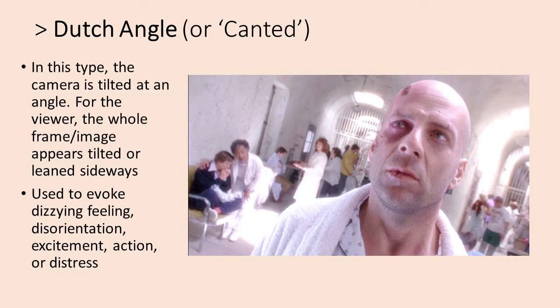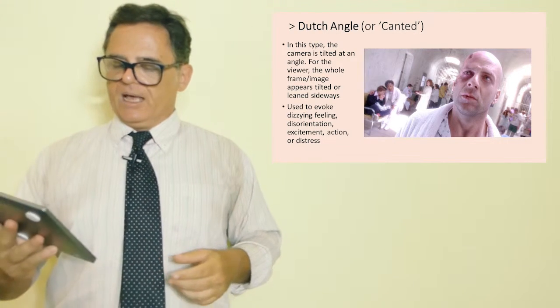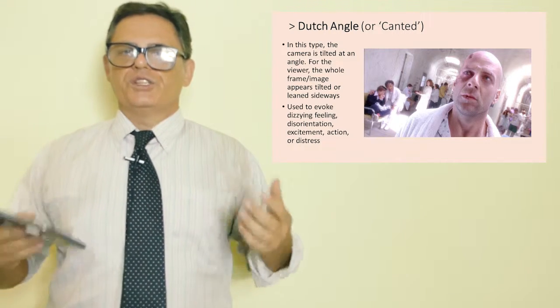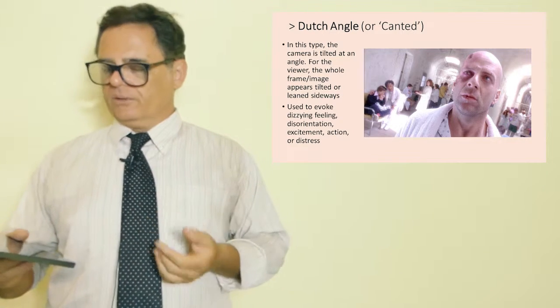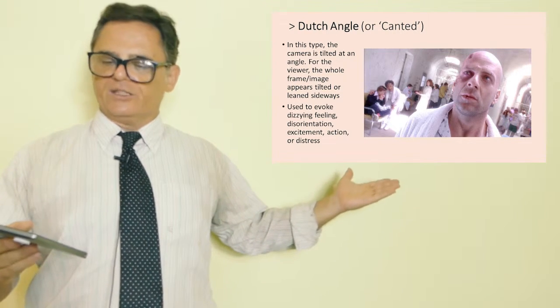Dutch angle. It's also called canted. This is used, as you can see, the camera is actually tilted on its axis, so the character appears to be leaning. The character and the entire environment appears to be leaning. It's been used throughout the years since it really had a heyday in the days of the noir films, in the 40s and 30s. That's when this style, this shot really came into being. And it's been in use ever since then.